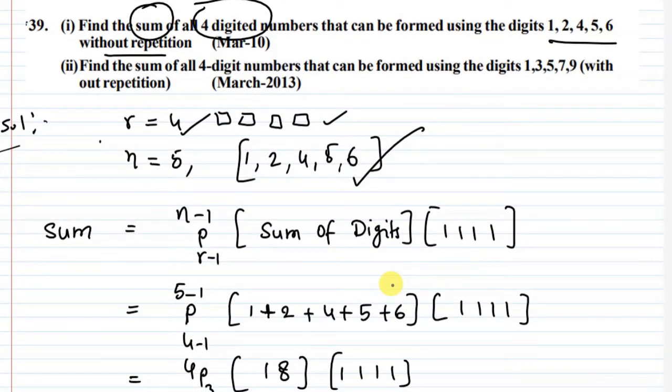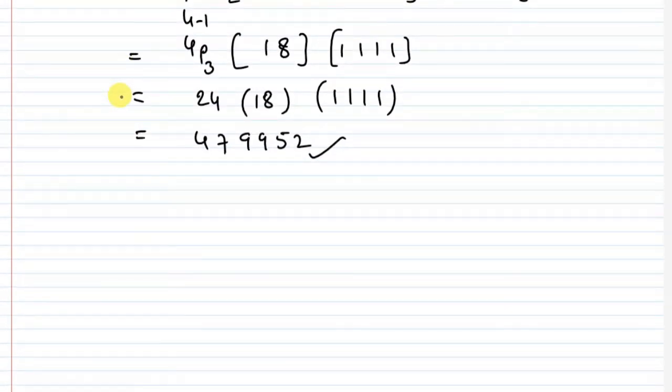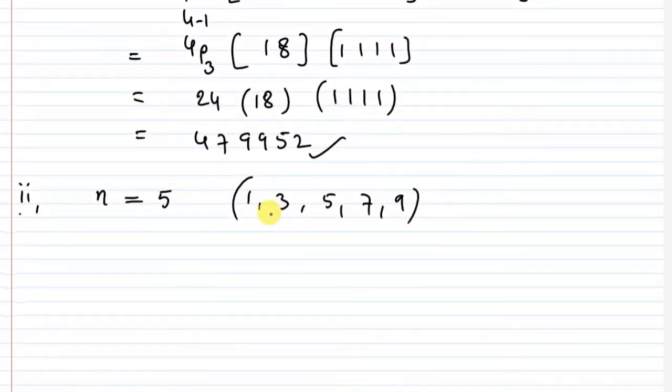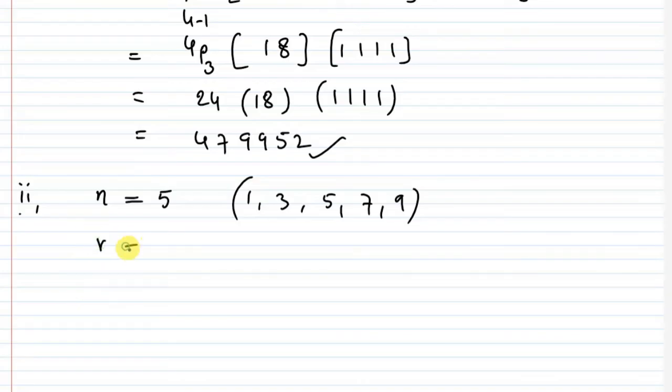Second question: find the sum of 4-digit numbers formed using digits 1, 3, 5, 7, 9 without repetition. We have 5 digits: 1, 3, 5, 7, 9. R value is 4 for 4-digit numbers, so we have 4 empty boxes to fill with the given digits.